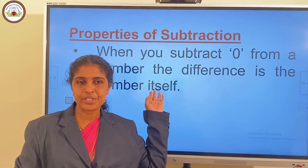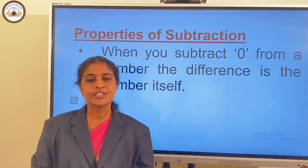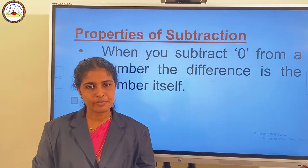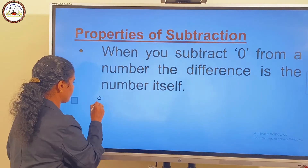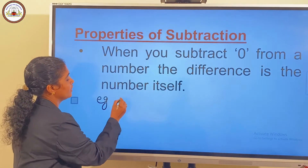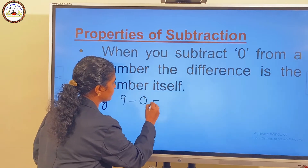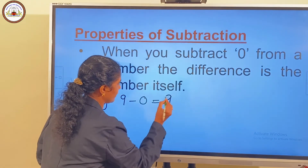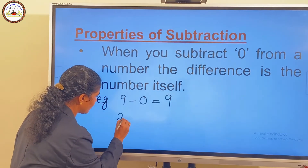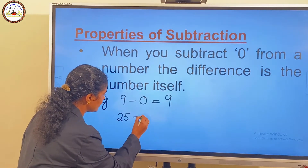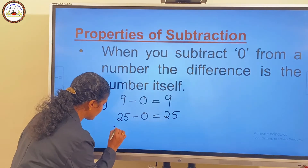Next we have the properties of subtraction. The first property is: when you subtract 0 from a number, the difference is the number itself. Consider our example. 9 minus 0 is 9. Consider a two-digit number: 25 minus 0 is equal to 25.